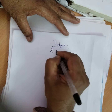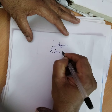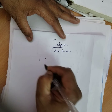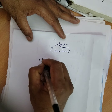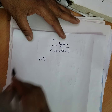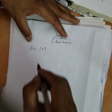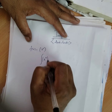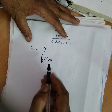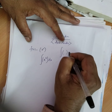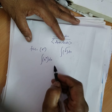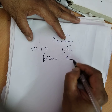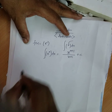Integration is also called anti-derivative. For example, take any function — suppose x to the power of n. The formula is: integration of x to the power of n dx equals x to the power of n plus 1, divided by n plus 1, plus c.